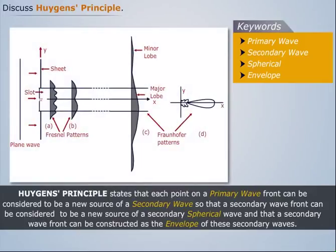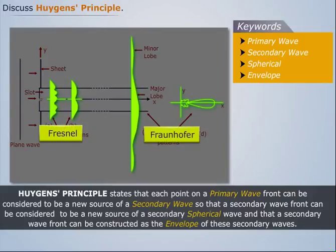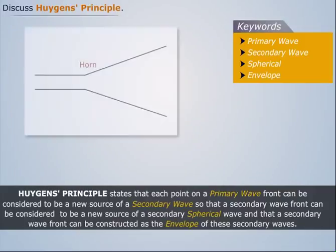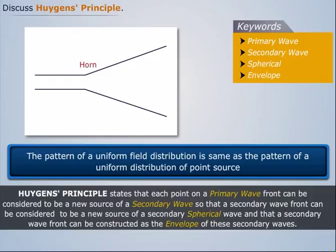The Fresnel and Fraunhofer patterns of a slot of width are formed. The field distribution across the mouth of a long electromagnetic horn antenna is shown. The pattern of a uniform field distribution is the same as the pattern of a uniform distribution of point sources.